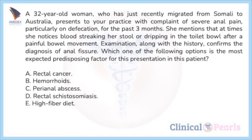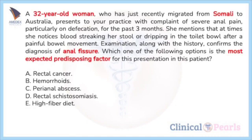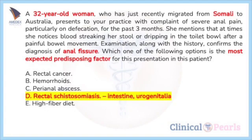E) a high fiber diet. Take note the pertinence in this case: given the fact that the patient is an immigrant from Somalia where schistosomiasis is endemic, rectal schistosomiasis is most likely to have predisposed to the anal fissure and such presentation. Schistosomiasis is either intestinal or urogenital depending on where the adult flukes are located. In intestinal schistosomiasis, adult worms occupy mesenteric veins and their eggs pass into the lumen of the intestine and reach the feces.